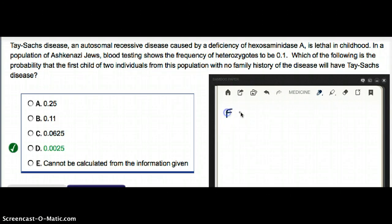The frequency of heterozygotes is 0.1. Which of the following is the probability that the first child of two individuals from this population with no family history of the disease will have Tay-Sachs?